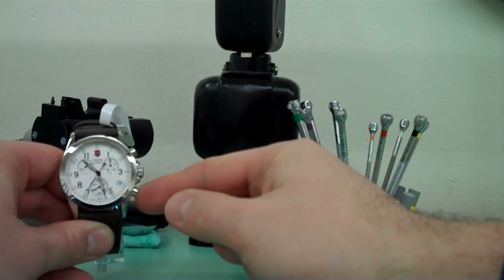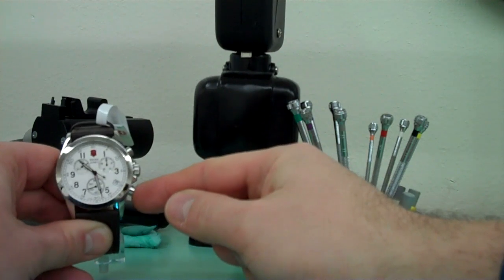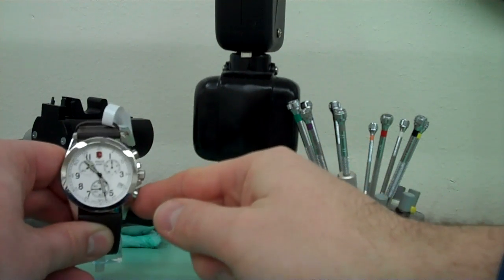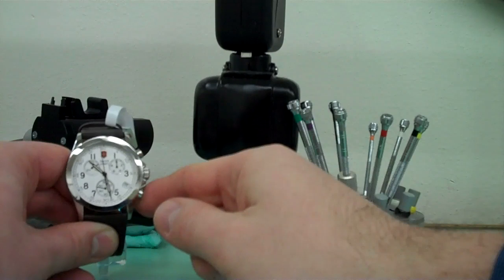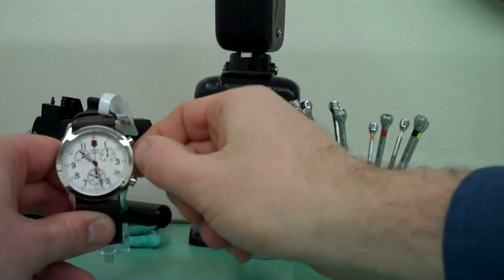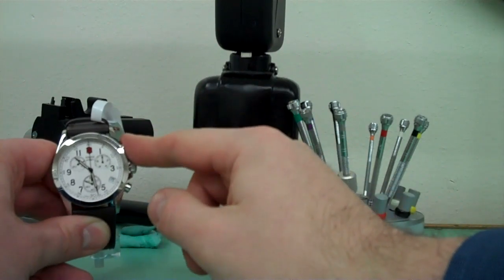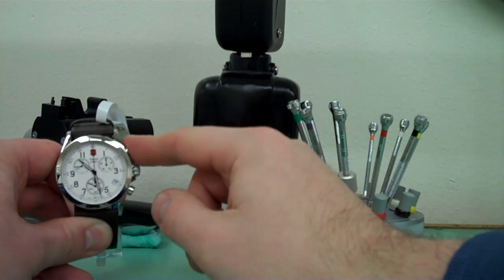The bottom pusher, the 4 o'clock pusher, will manipulate the large sweep stopwatch hand. And then I usually push it in and pull it all the way out again, and the 2 o'clock pusher will manipulate the 30-minute counter.